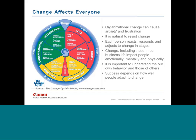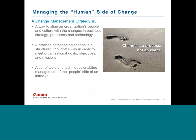By understanding where people are and what their behaviors are, you're able to tailor your specific communications and training activities to individuals. This leads us to developing a change management strategy. I want to start by noting that change is a process and not an event — a key point to take away from today. An event ends, but change really doesn't end. The strategy is a way to align the organization's people and culture with changes in business strategy, processes, and technology. It's a process of changing in a structured and thoughtful way, considering organizational goals, mission, objectives, and culture. It's also a set of tools and techniques enabling the management of the people side of an initiative from a tactical level.